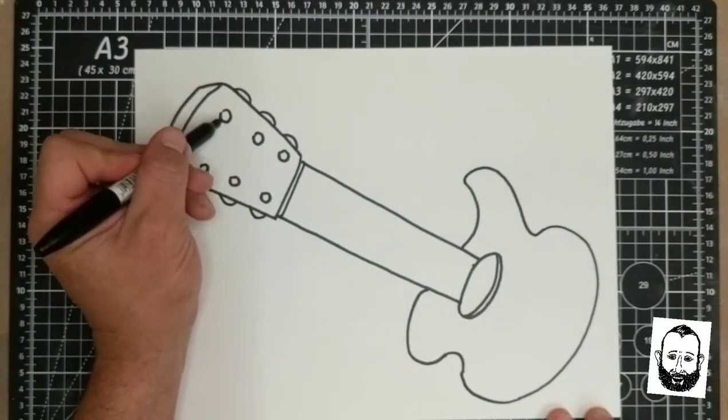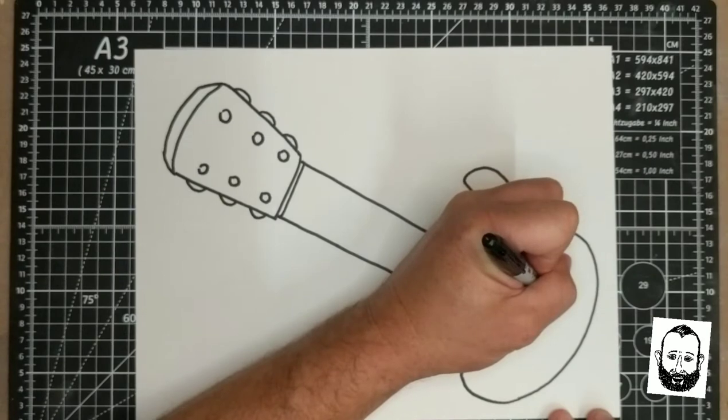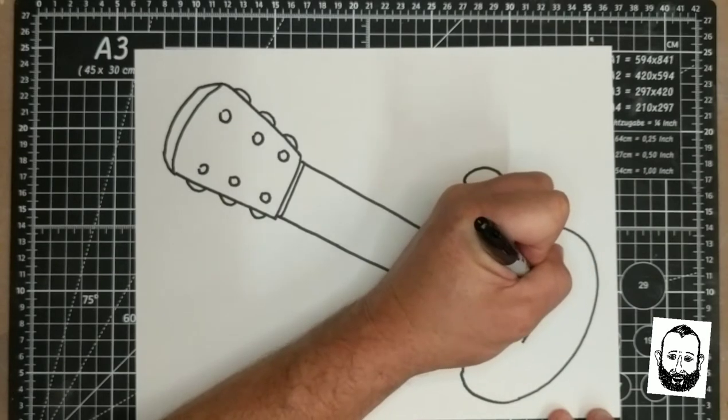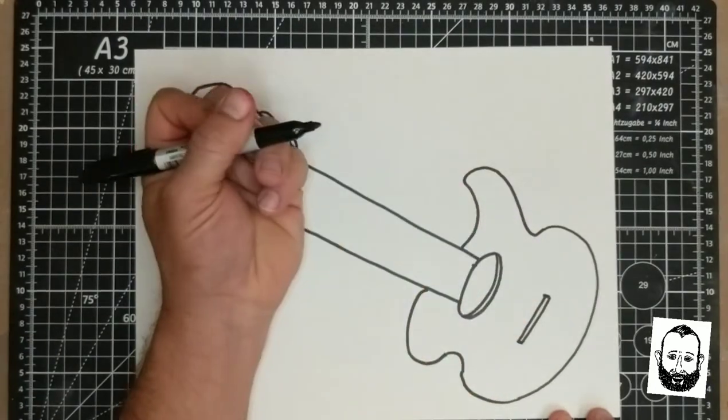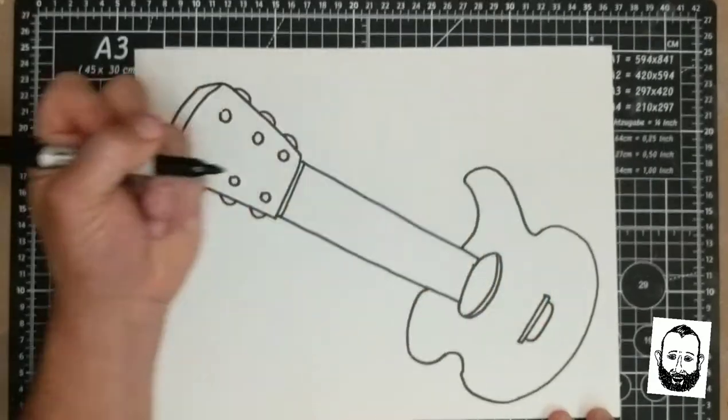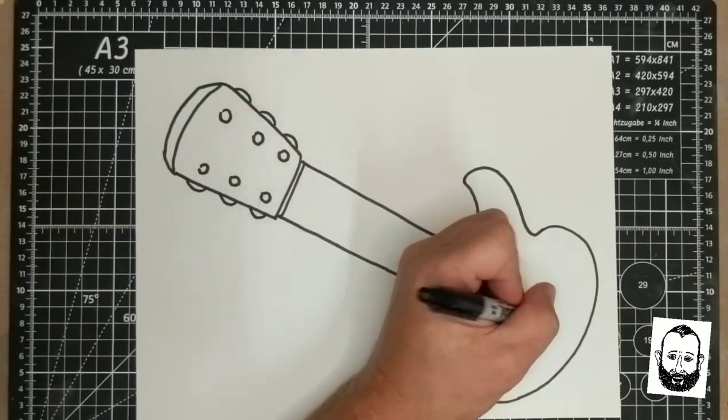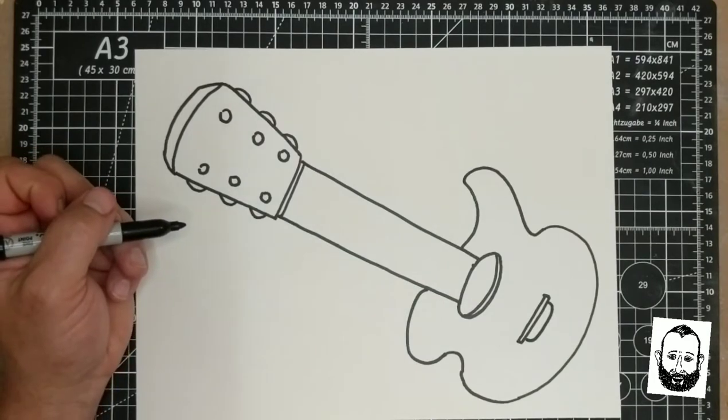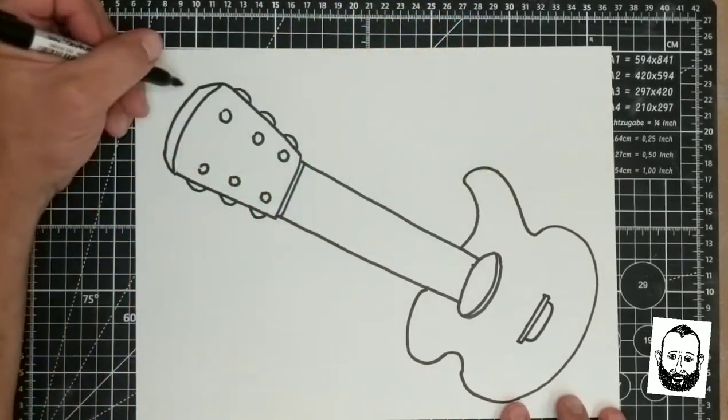The strings come down all the way through and then they stop back here. And they go over this little rail right here. And so we can make a rectangle shape. And then let's just go ahead and make a rounded shape like this on the back of it where the strings would connect.